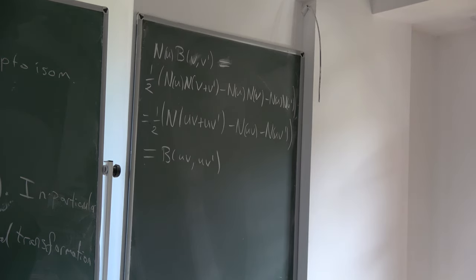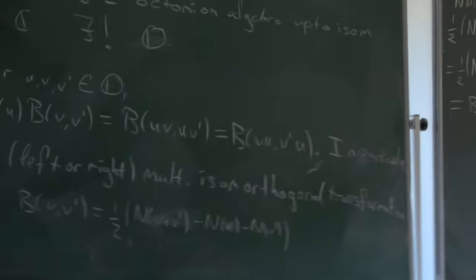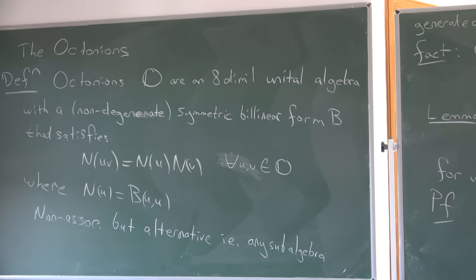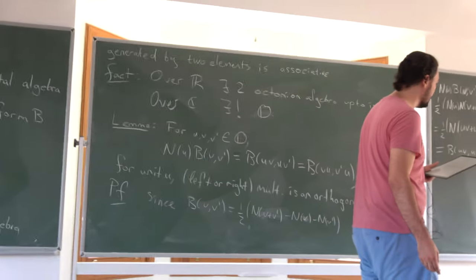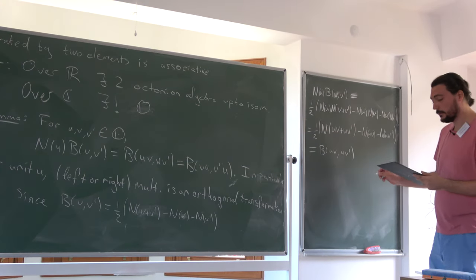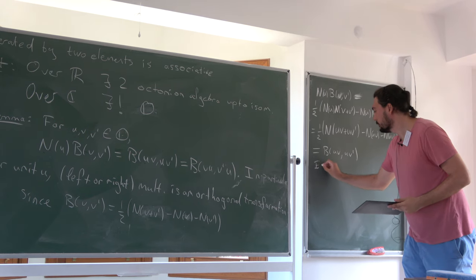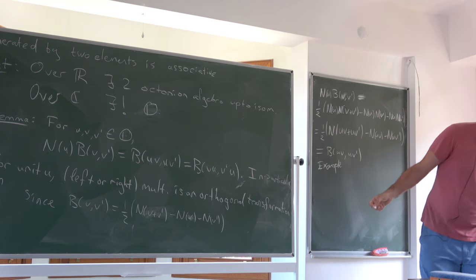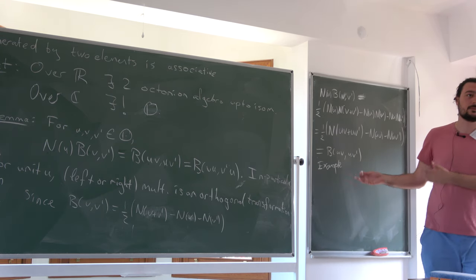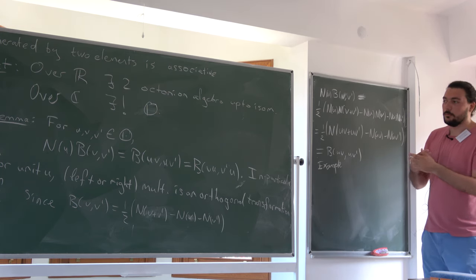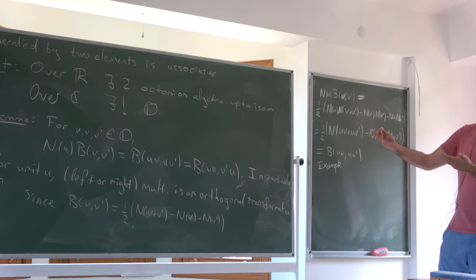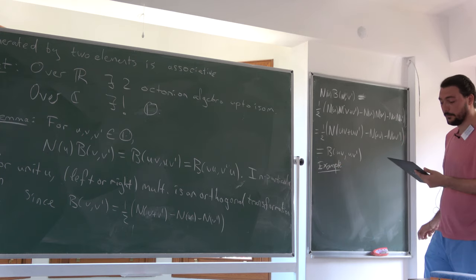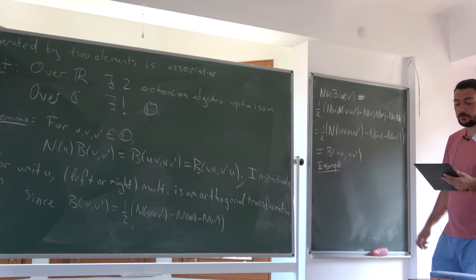Now I want to define a concrete example of Octonians. The reason I give this example is that pretty much anytime I want to think about Octonians I'll use this one, since I'll mostly be interested in positive definite metrics, and in that case there's only one octonian up to isomorphism. So this will be our reference for computations.